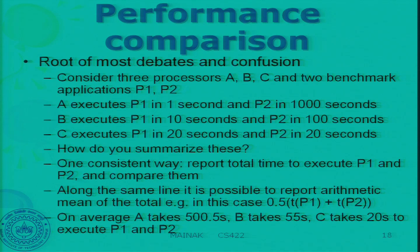If you look at what you get: A takes 500 and a half seconds, B takes 55 seconds, and C takes 20 seconds to execute P1 and P2. So according to the arithmetic mean, you would conclude that C is the best. You might say you would go and buy C. Do you see any problem with that?